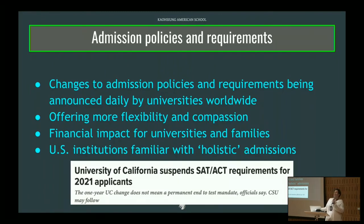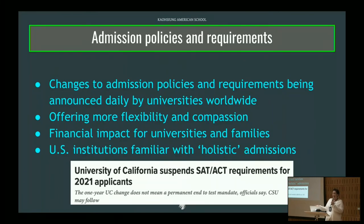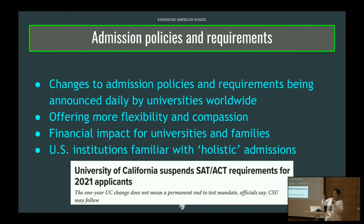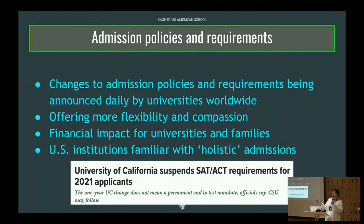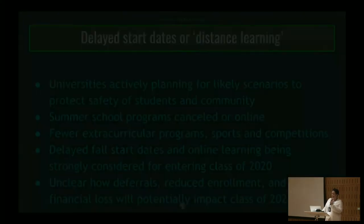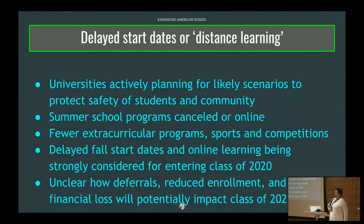If your student has taken the SAT and is happy with their score and falls somewhere in the average for an institution, it's a good idea to go ahead and submit. If they're not happy with their score or plan to retake, we can decide together whether to include it. That's a huge change for next year. The situation with delayed start dates and distance learning is also going to potentially have an impact — universities are actively planning different scenarios, and many have already canceled summer school and summer enrichment programs.